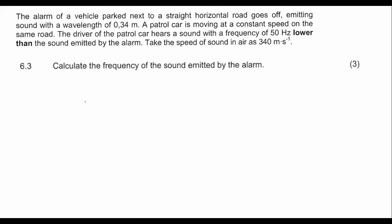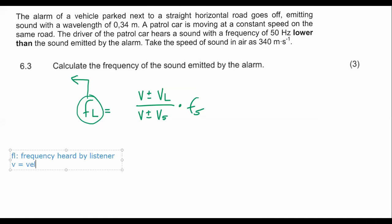Both formulas will be given to you on the formula sheet. The first one is that the Doppler effect formula goes frequency of listener equals V plus or minus the velocity of the listener, over V plus or minus the velocity of the source, multiplied by the frequency of the source. I'll give you a quick reminder: FL is frequency heard by listener, V is velocity of sound in air, VL is velocity of listener, Vs is velocity of source, and Fs is frequency of the source.